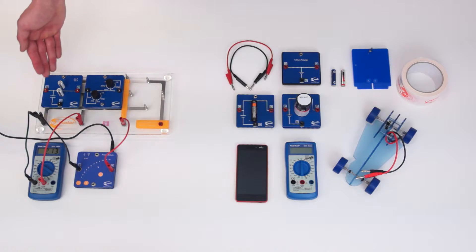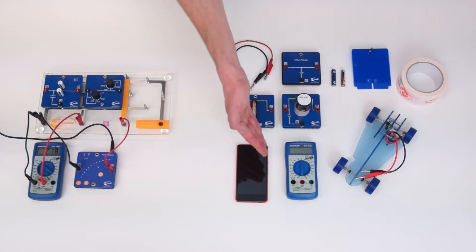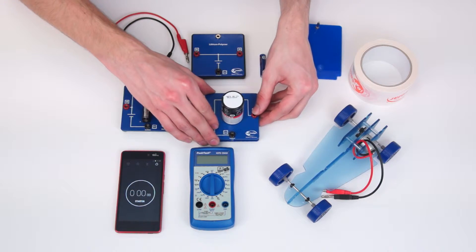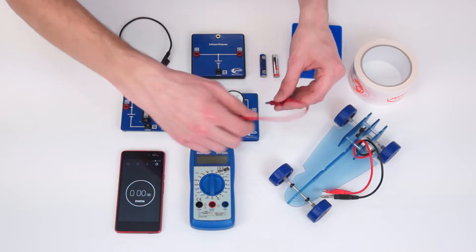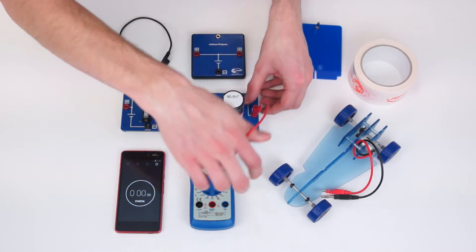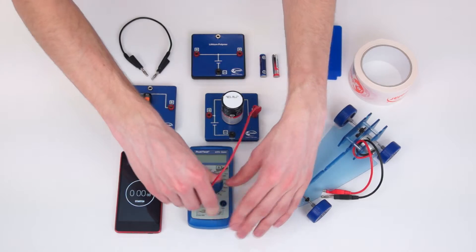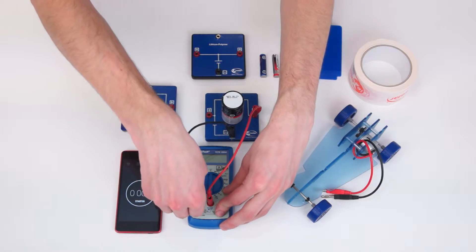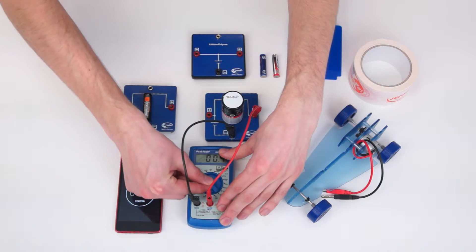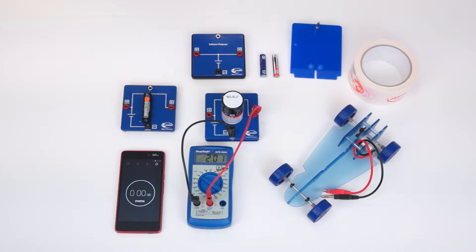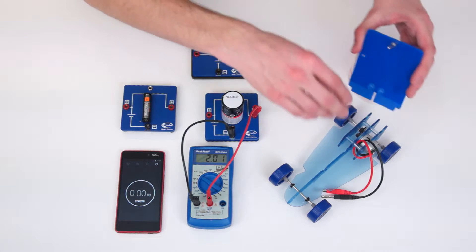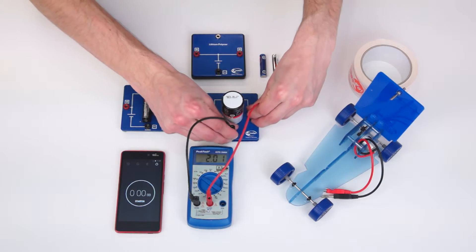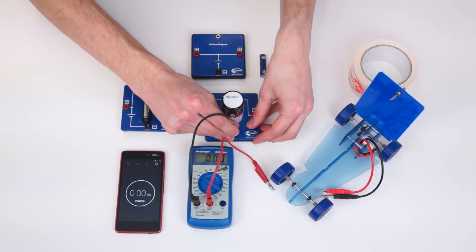While the capacitor is being charged, we want to examine the other batteries. To this end, we first take the lead battery and determine its open circuit voltage with the second multimeter. It amounts to 2.01 volts. Then we take the electric car and plug in the battery adapter. Here the lead battery is attached and already connected with a cable to the electric motor.